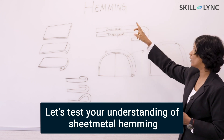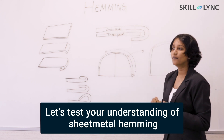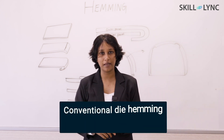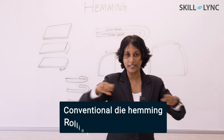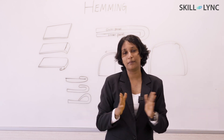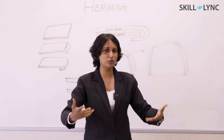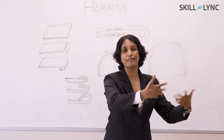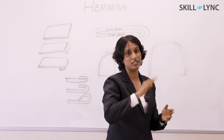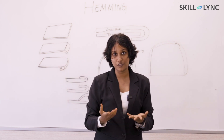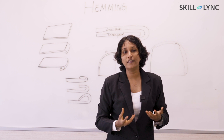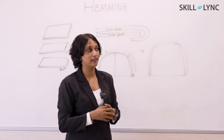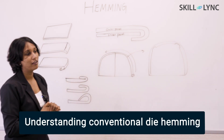Hemming can be done on a single sheet metal or on two panels. When joining two panels, there are two major methods: one is conventional die hemming and the other is rolling hemming. With conventional die hemming, we first perform different operations on the sheet metal — drawing operations, trimming operations, and several other primary manufacturing operations. Hemming is a secondary manufacturing operation, and depending on the type of hem, there can be pre-hemming and post-hemming treatments.